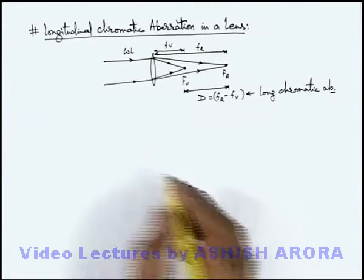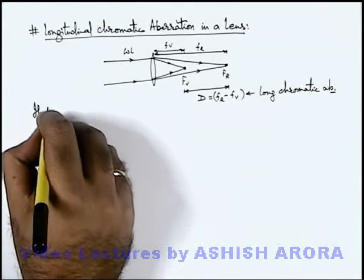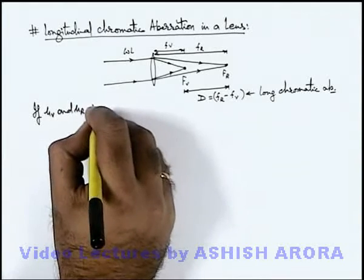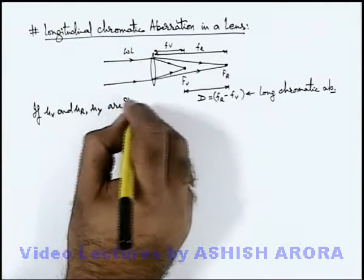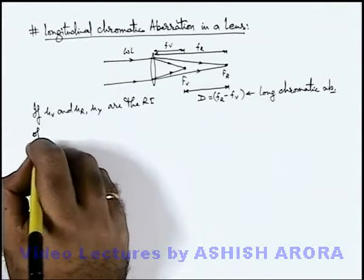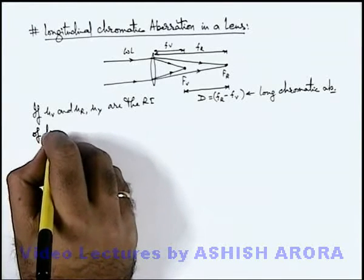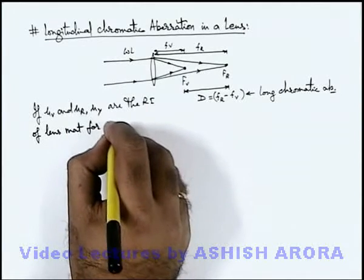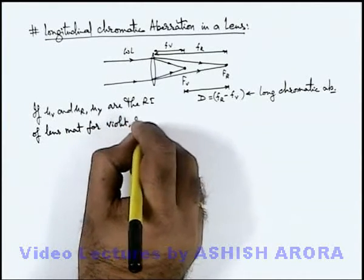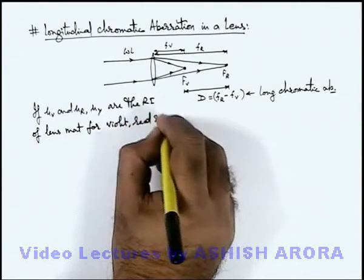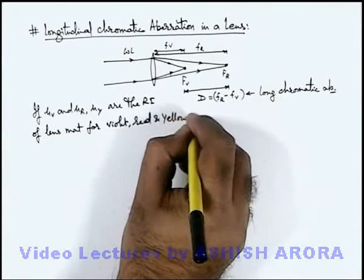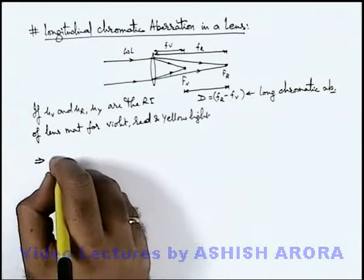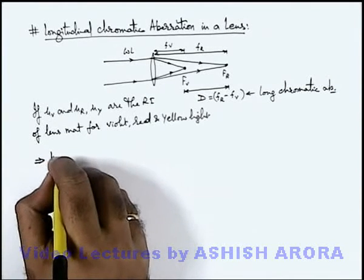This we can also mathematically calculate if mu_v and mu_r as well as mu_y are the refractive indices of lens material for violet, red, and yellow light. This implies here we can write by lens maker's formula